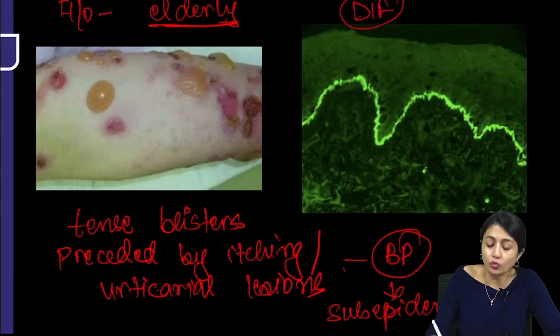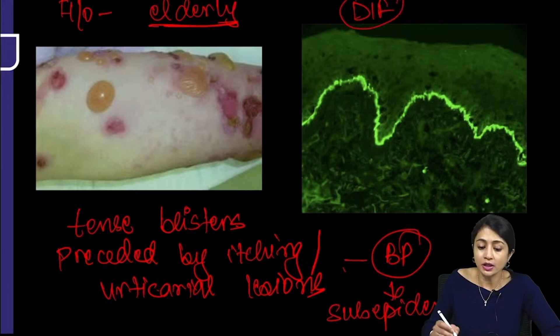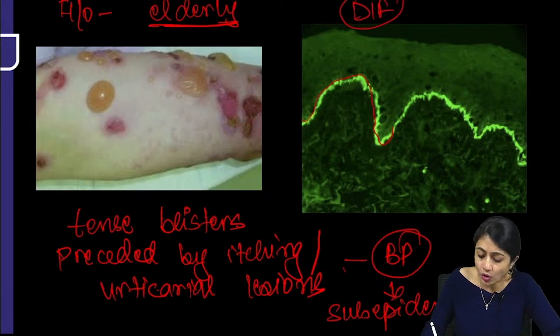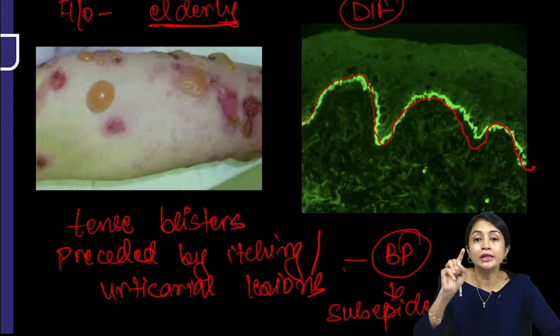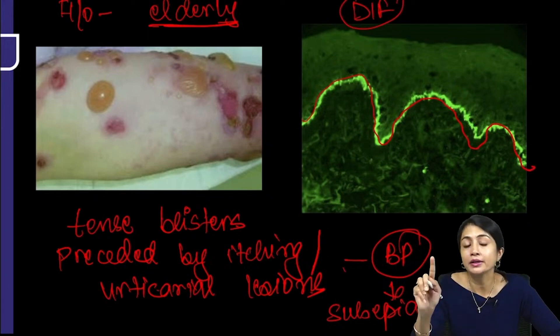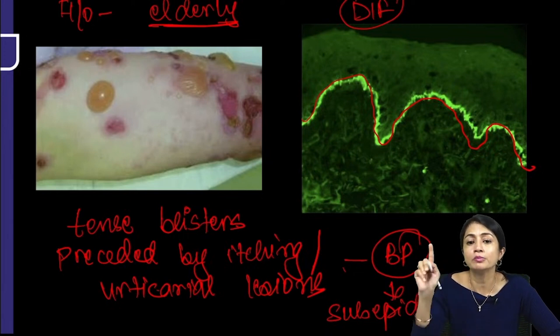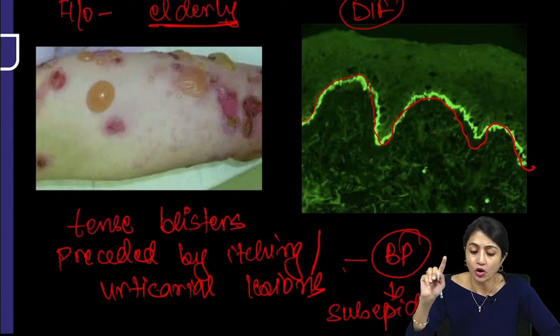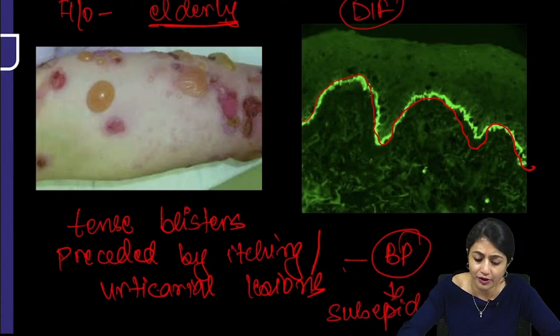DIF is the gold standard. In bullous pemphigoid, you see a linear pattern of fluorescence at the dermo-epidermal junction — a linear pattern which is characteristic of bullous pemphigoid.